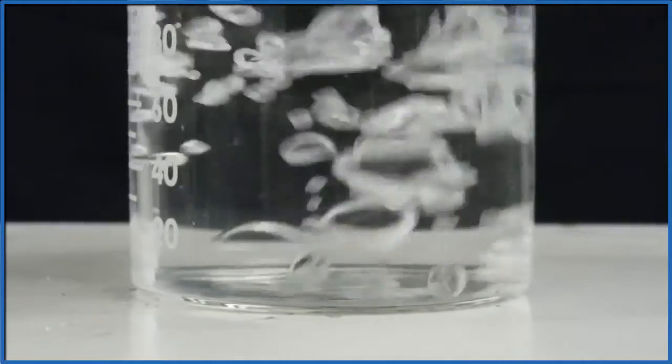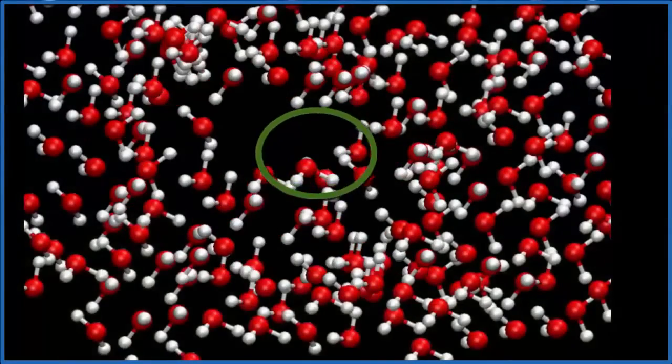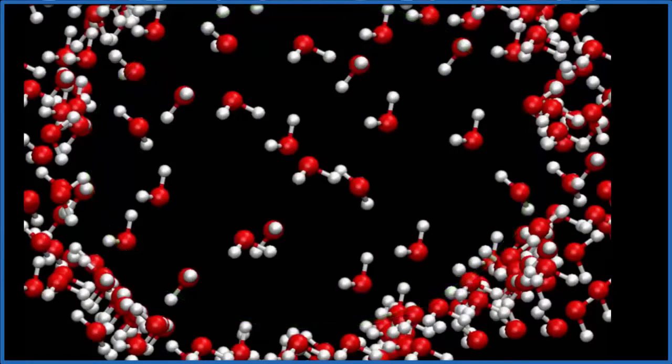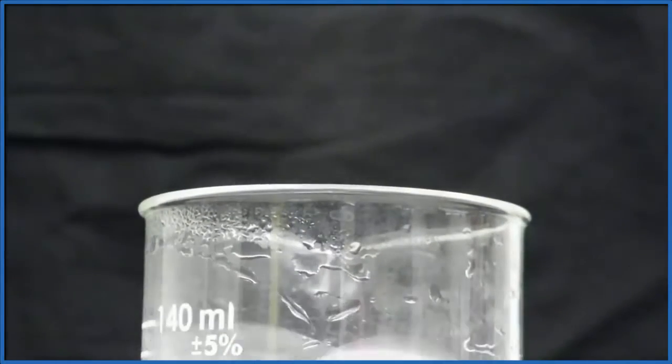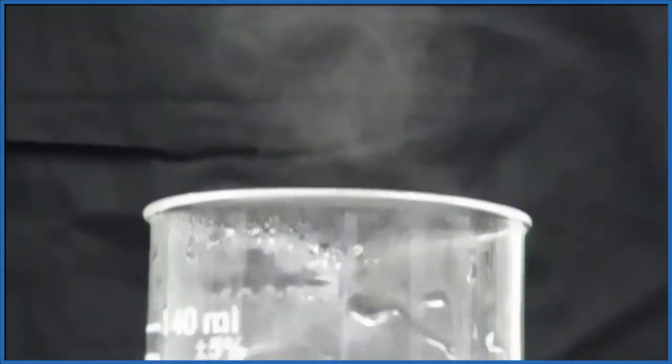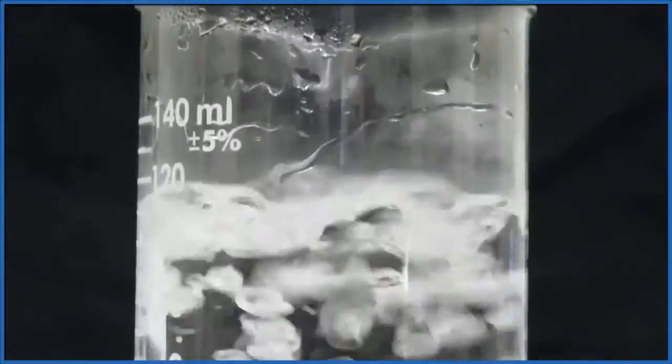So back to boiling. Boiling happens when water molecules have enough energy to spread out and to form bubbles. These bubbles rise to the surface, and they release the water vapor. Since the water vapor contains these more energetic molecules, releasing them into the air cools the water.